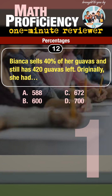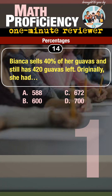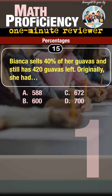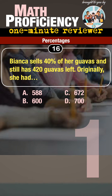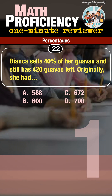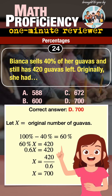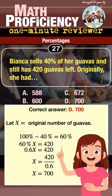A) 588, B) 600, C) 672, D) 700. The correct answer is D, 700. Let x be Bianca's original number of guavas.